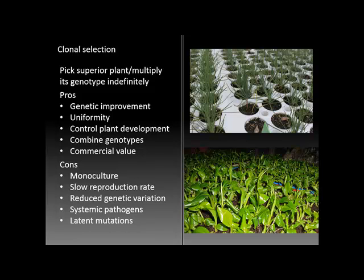Stepping back to clonal selection, the goal is to pick a superior plant with qualities that are desired and will enhance the value of the crop, and then to multiply that genotype indefinitely. Once the superior plant is determined, it is propagated through a variety of techniques, historically through breeding, but now through biotechnology.